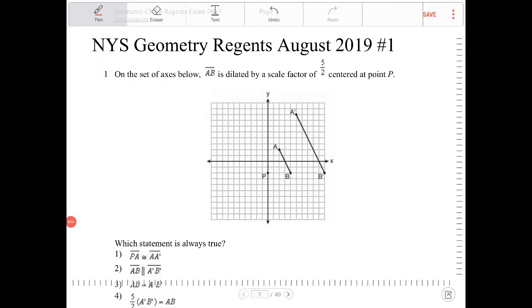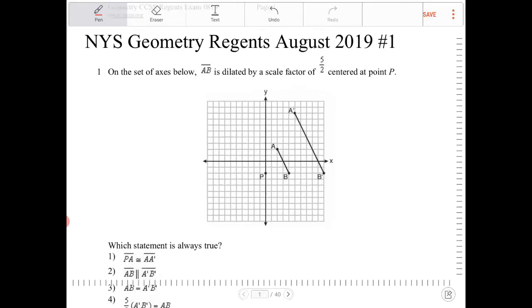On the set of axes below, AB is dilated by a scale factor of 5 halves centered at point P. Which statement is always true?